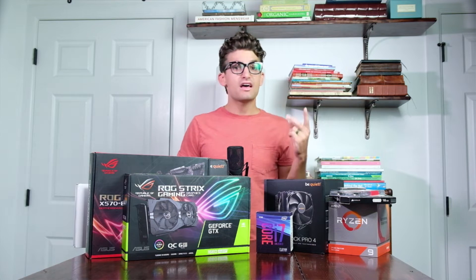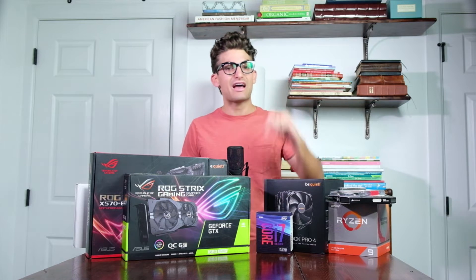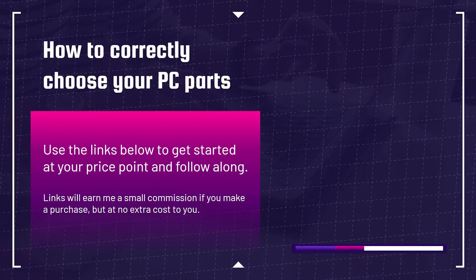To save you a little time, I've detailed out three separate parts lists in the links below: a $750 budget, a $1,000 budget, and our $1,500 budget that we're picking the parts for right now. I've done that for both Intel and Ryzen. If you do make a purchase through those links, I will get a small commission, but at no extra cost to you — and that's what keeps this channel alive.